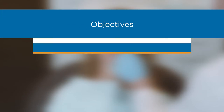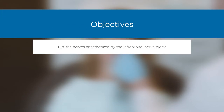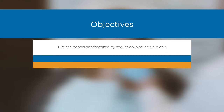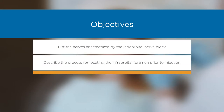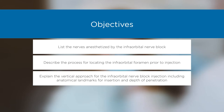Objectives: List the nerves anesthetized by the infraorbital nerve block. Describe the process for locating the infraorbital foramen prior to injection. Explain the vertical approach for the infraorbital nerve block injection, including anatomical landmarks for insertion and depth of penetration.